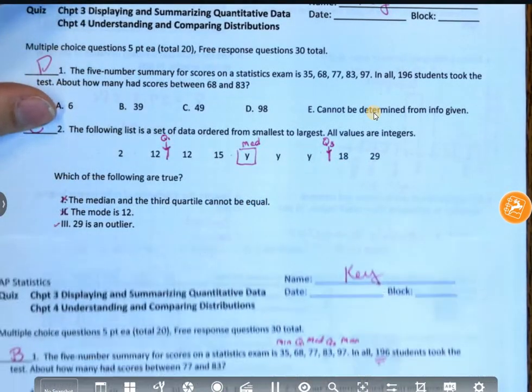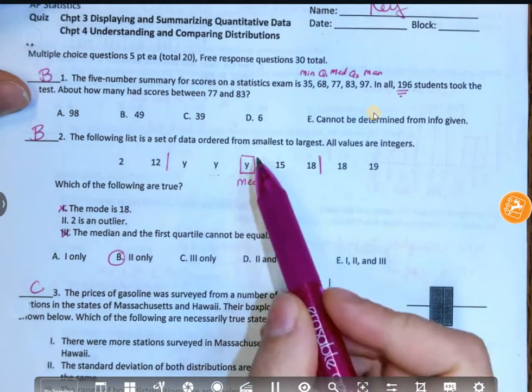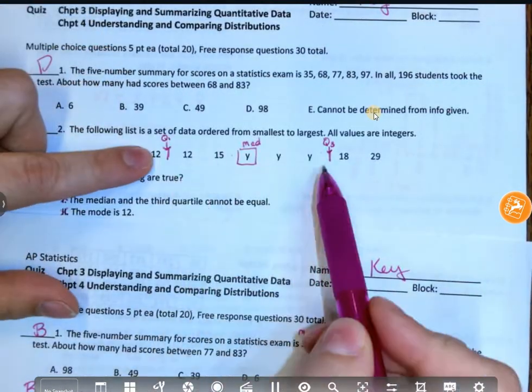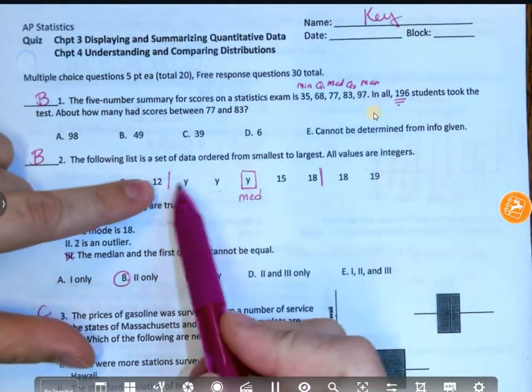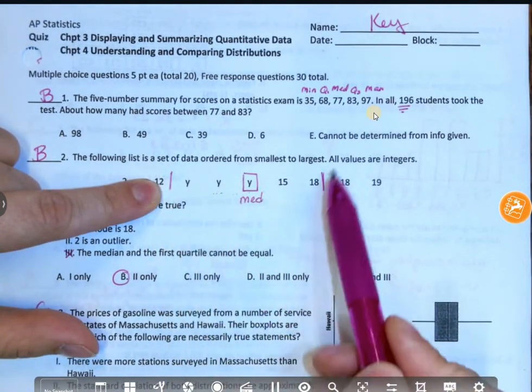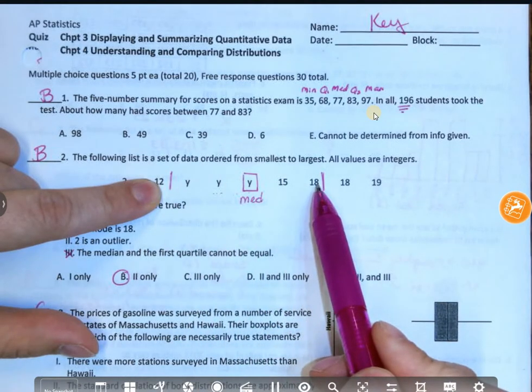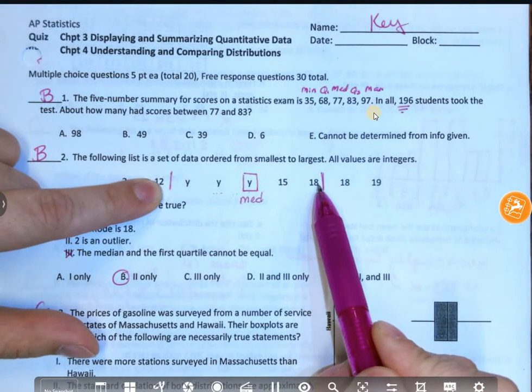So the median and the first quartile can be the same. And if I look at this one, same idea. This one says the median and the third quartile can't be the same. It's the same idea. If Y is all 18, it perfectly works. And the last one talks about something being an outlier. The problem is here, we don't quite know where our quartiles fall. But I know at most, like the biggest my quartile range here could be, would be what? Like if I went from 12 to 18, what would it be? 6.